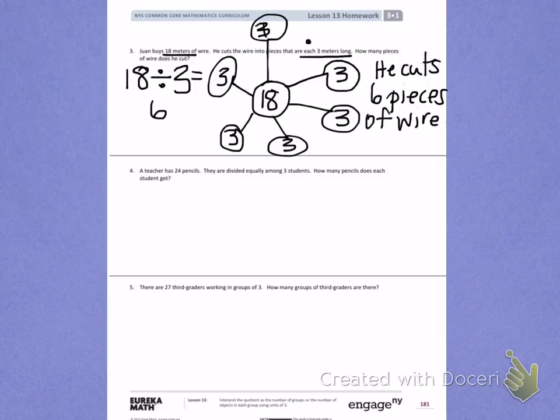Number 4. A teacher has 24 pencils. They are divided equally among 3 students. How many pencils does each student get? So this time we have 24 pencils. The teacher is dividing them among 3 students. We want to know how many pencils each student is going to get.